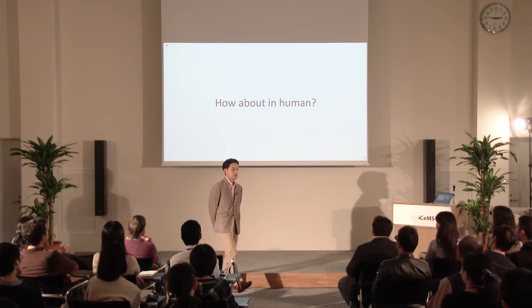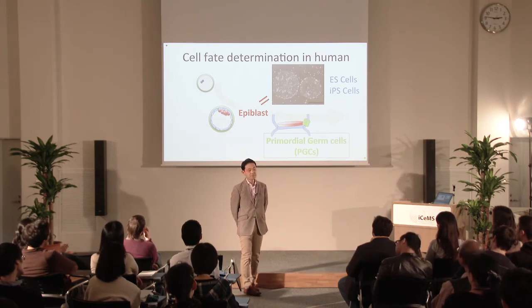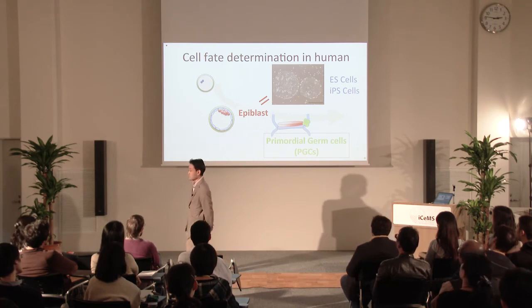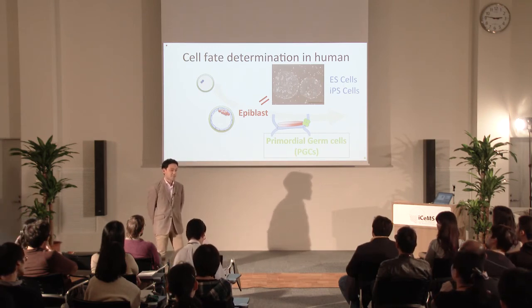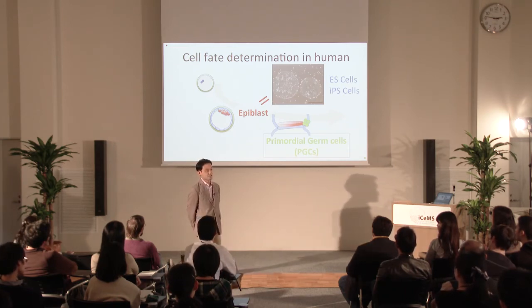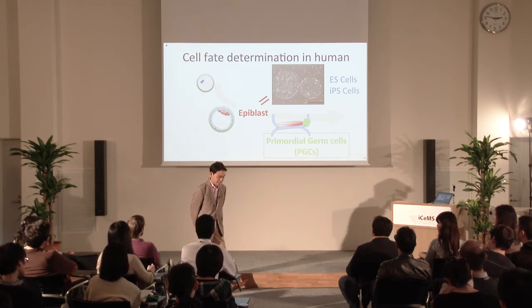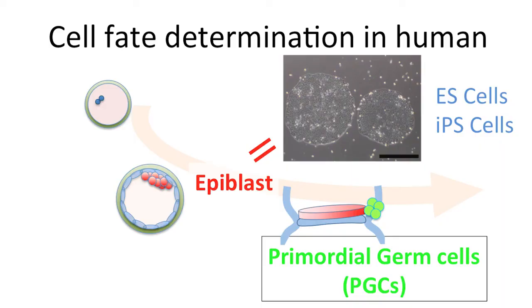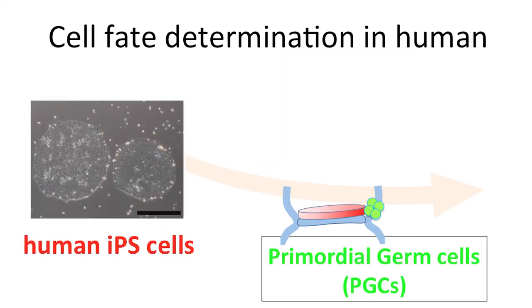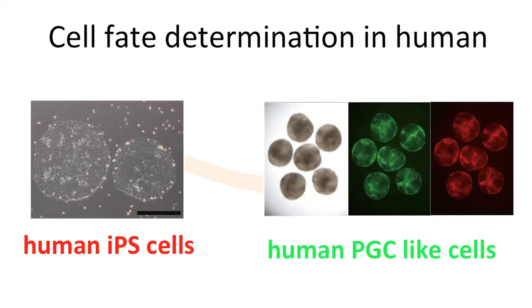Now, how about in human? Human ES cells and IPS cells have similar characteristics to the epiblast of the early embryo, but they are quite different from mouse ES cells. Mouse ES cells are regarded as a more naive state, while human cells are developmentally advanced, so the signaling requirements are different. Also, the shape of the epiblast when PGCs are specified is completely different. We needed to tune the signaling so that the cells could acquire the PGC lineage. With several trials and errors, we finally made it — starting from human iPS cells, we could make human PGC-like cells.